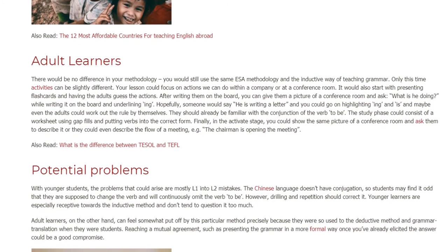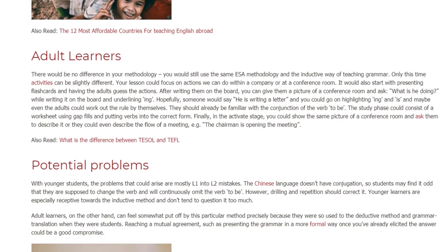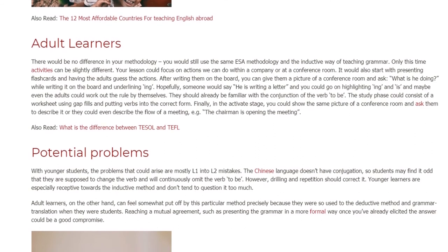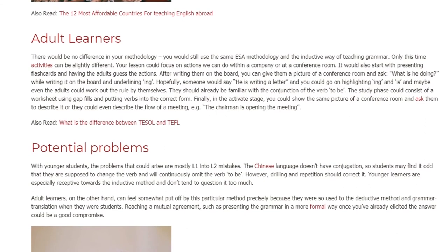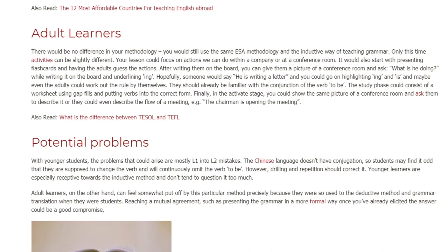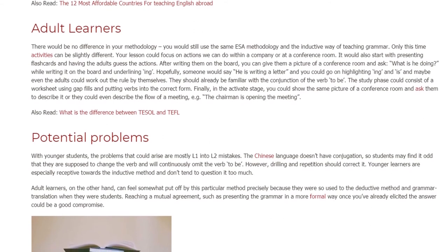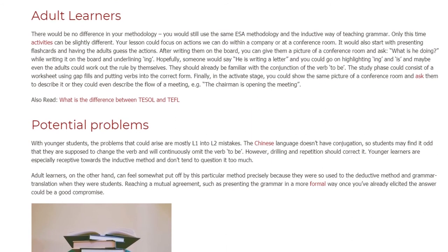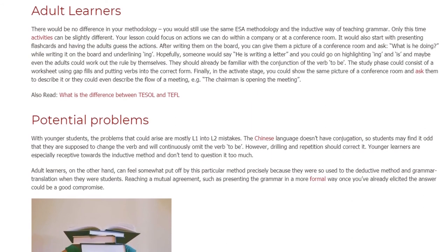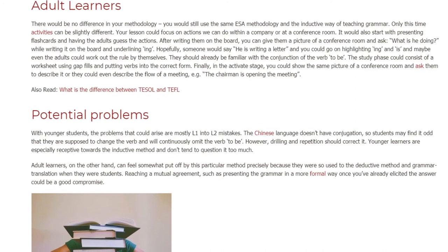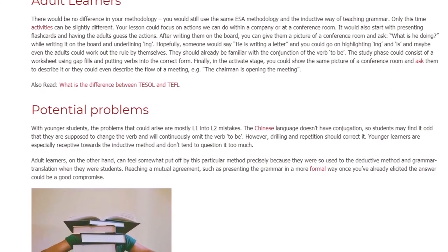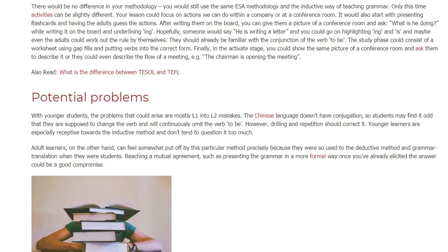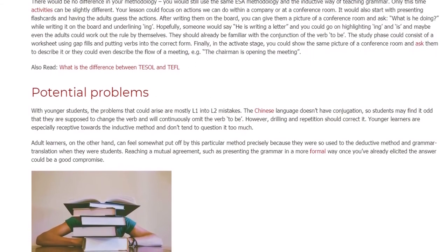While writing it on the board and underlining -ing, hopefully someone would say 'he is writing a letter,' and you could go on highlighting -ing again and again. The students could work out the rule by themselves — they should already be familiar with the conjugation of the verb 'to be.' The study phase could consist of a worksheet using gap fills and putting verbs into the correct form. Finally, in the activate stage, you could show the same picture of a conference room and ask them to describe it, or they could describe the flow of a meeting — for example: the chairman is opening the meeting.